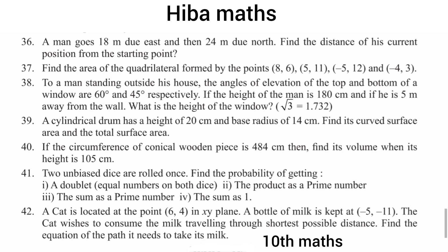A cat is located at a point in the XY plane. A bottle of milk is kept at another point. The cat wishes to reach it through the shortest possible distance. Find the equation of its path — this involves finding the equation of the line through two points.